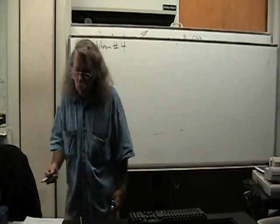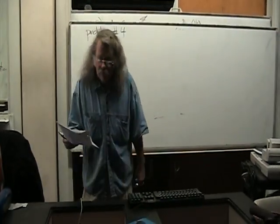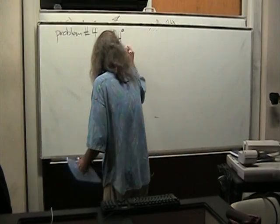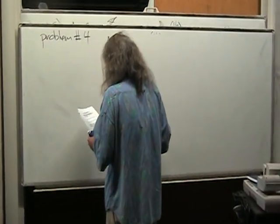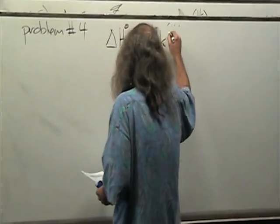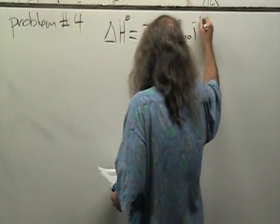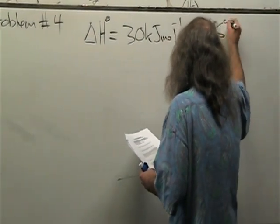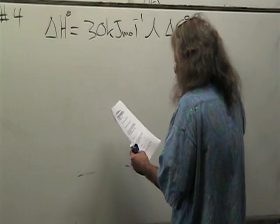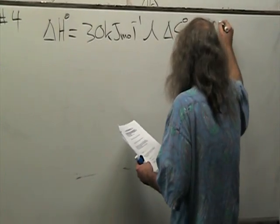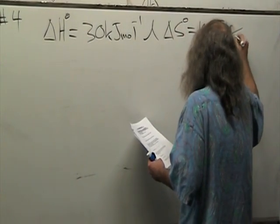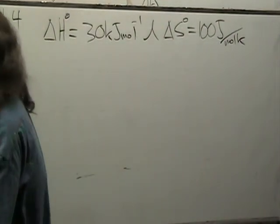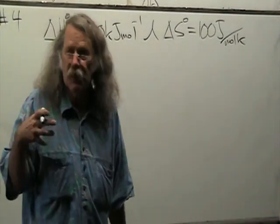Problem number four: A process has an enthalpy equal to 30 kilojoules per mole and an entropy change equal to 100 joules per mole Kelvin. At what temperature is this process going to be spontaneous?